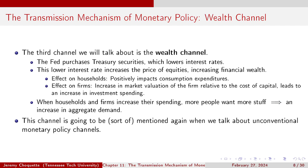The next is the wealth channel. The Fed purchases treasury securities, which lowers interest rates. This lower interest rate increases the price of equities, increasing financial wealth. This has a two-fold effect: it positively impacts household consumption expenditures, and it increases the market valuation of firms relative to the cost of capital, leading to an increase in investment spending. When households and firms increase their spending, more people want more stuff — increase in aggregate demand. We'll revisit this channel when talking about unconventional monetary policy.